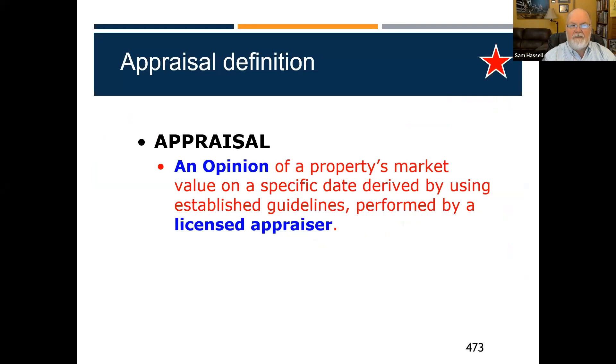Those are the three approaches we're going to talk about. Appraisers have a tough job — they have to go with the market trend. Since housing is a lagging indicator, we're usually the last to know. An appraisal is an opinion of a property's market value on a specific date, derived using established guidelines, performed by a licensed appraiser.